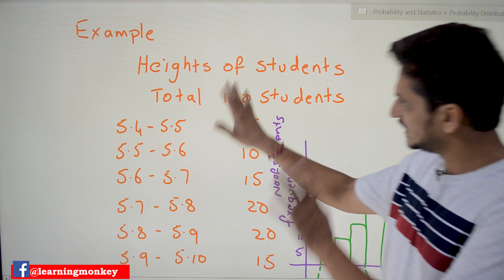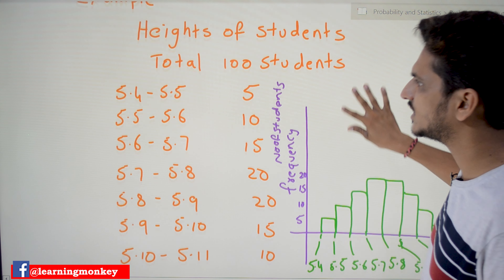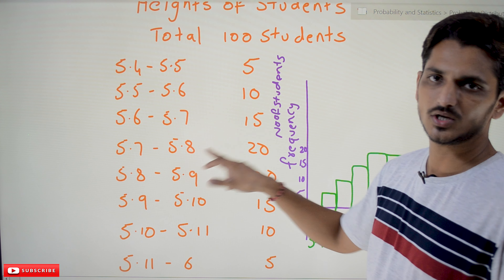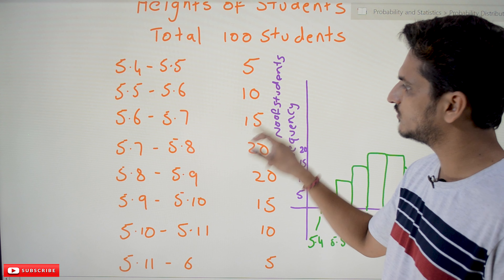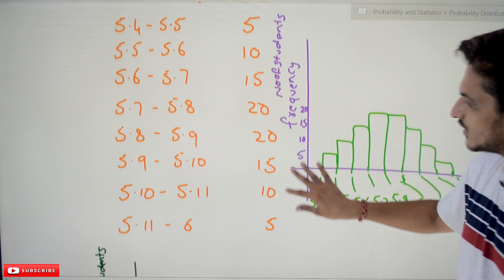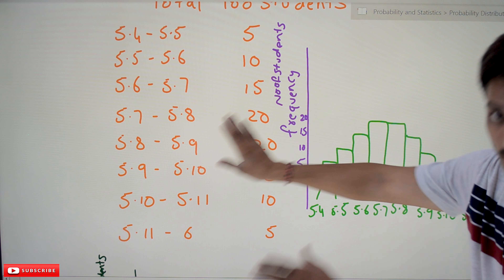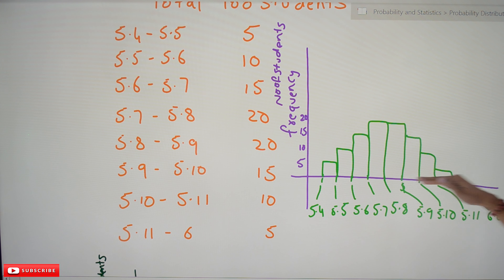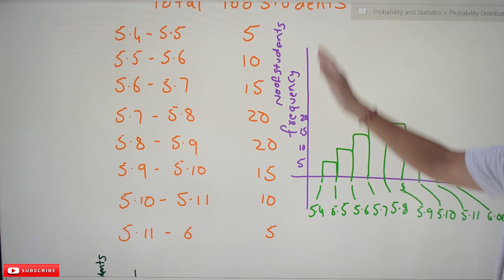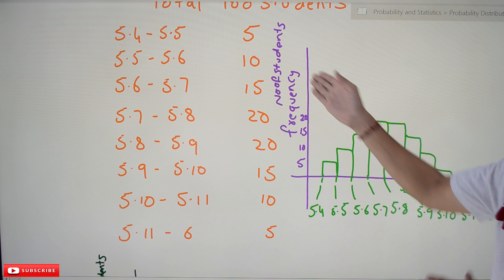With this example you will get clarity. We are taking a total of 100 students. 5.4 to 5.5: 5 students; 5.5 to 5.6: 10 students; 5.6 to 5.7: 15 students; 5.7 to 5.8: 20 students; similarly 20, 15, 10, 5. If you plot this data, on the x-axis we take heights of the students — 5.4, 5.5, 5.6 and so on — and on the y-axis we take number of students, or frequency.